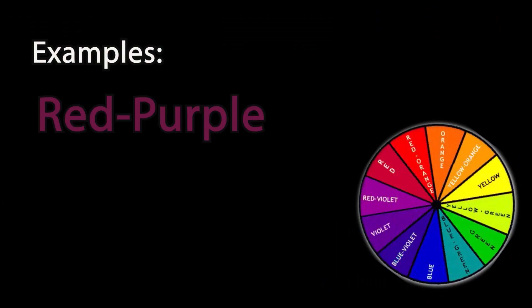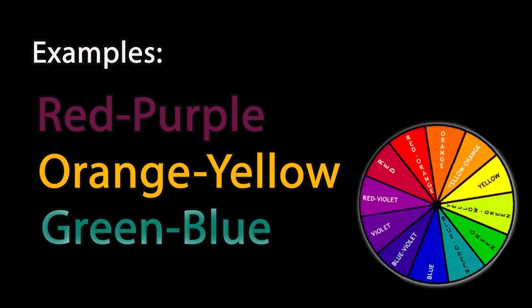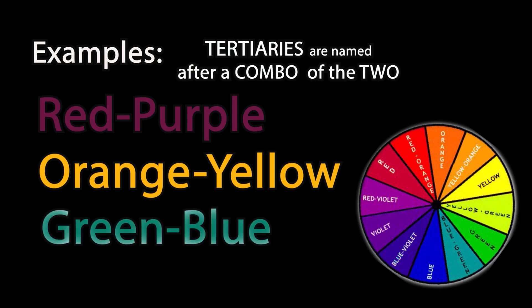Examples are red, purple, orange, yellow, or even green, blue. Tertiaries are named after a combo of the two.